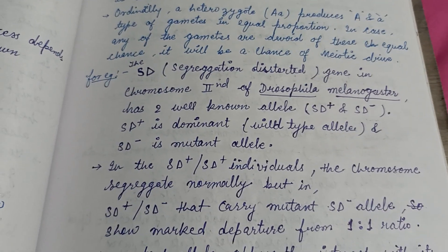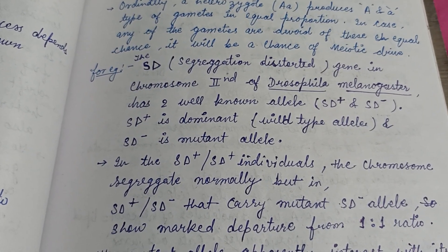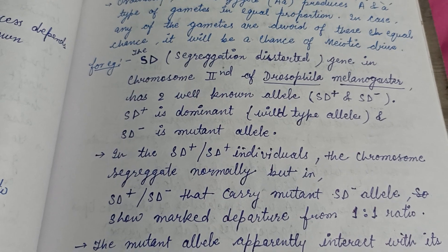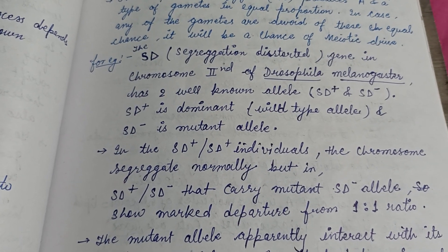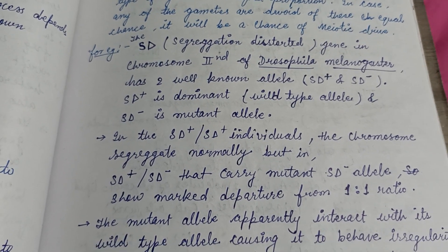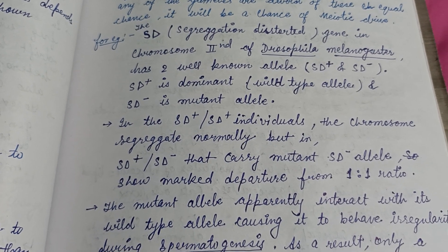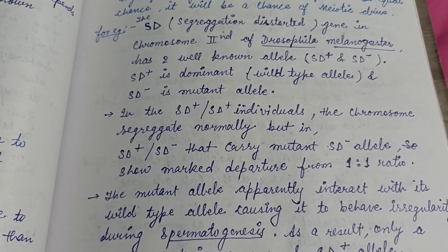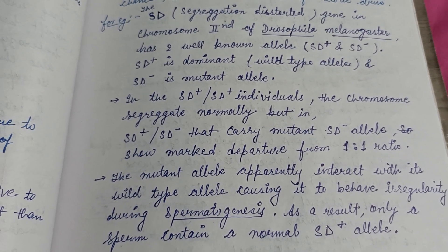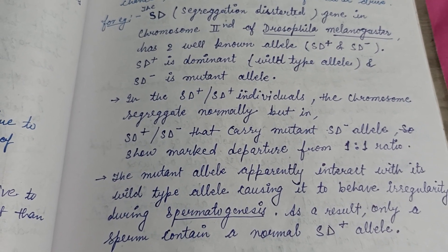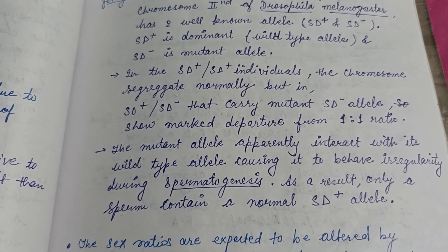In chromosome 2 of Drosophila melanogaster, SD is the well-known gene, that is segregation distorter. It has two well-known alleles: SD plus, which is a dominant allele, and SD minus, which is a mutant allele.